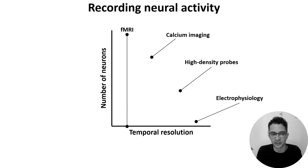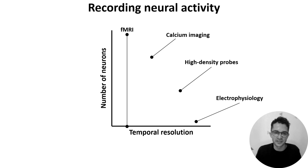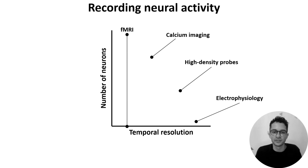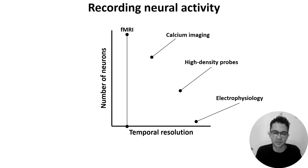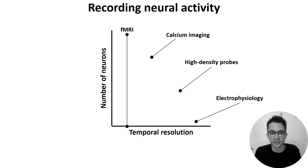Before moving on, I just want to mention two more things. First, there are many other methods to record neural activity. For example, EEG uses external electrodes to measure the brain's electrical activity, and voltage imaging uses indicators whose fluorescence changes with the neuron's membrane potential. It's thought that voltage indicators will be the next big thing in neuroscience. Second, there are lots of other things to consider beyond a method's temporal and spatial resolution — for example, most neural recordings are done on static subjects fixed under a microscope or lying in a scanner, but there is increasing interest in methods which allow neural activity to be recorded during free movement.